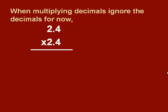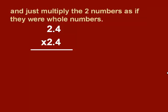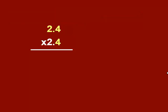When multiplying decimals, ignore the decimals for now and just multiply the two numbers as if they were whole numbers. So we'll start by multiplying 4 times 24, which is 96.